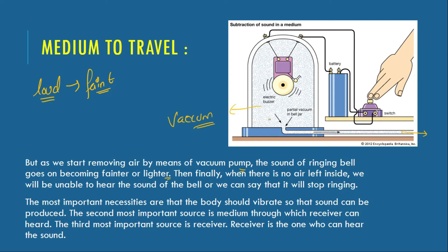So in this apparatus, in this example, what do we have to prove? When there is air in the bell jar, the wave produced has a medium for travelling. As we remove air, the wave is still produced but it has no medium to travel. When there is no medium to travel, we cannot hear the sound. So sound is a mechanical wave — it needs a material medium for propagation or travel.